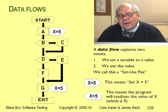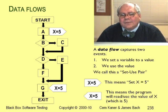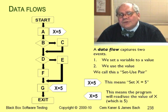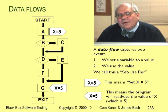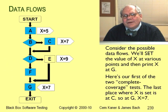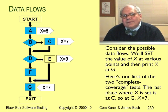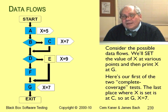I can't draw traditional data flow diagrams in this course — we don't have enough time. But the chart on this slide shows data flows. Look at step A: the program sets X to 5, then the program uses X at step G. Suppose we print the value of X at G — we can ask, what value does it print? When we set a value at A and use it at G, A and G form a set-used pair. Similarly, when we set X to 7 at C and use it at G, CG is a set-used pair. And our third set-used pair on this diagram is EG.